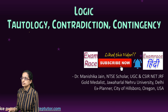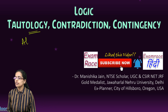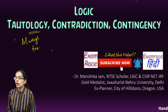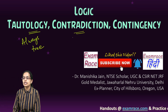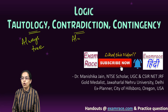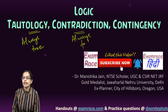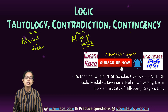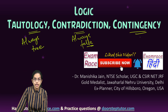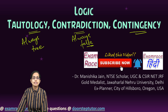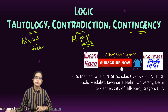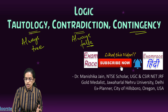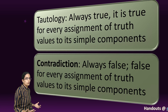Tautology simply says everything is always true. Contradiction says everything is always false. And then you have contingency, which represents the shades of grey — things that are neither always true nor always false; they can sometimes be true, sometimes be false. So let's understand these one by one.